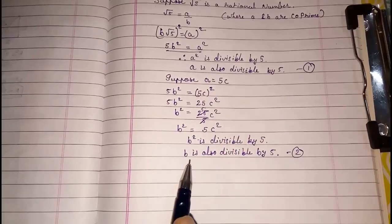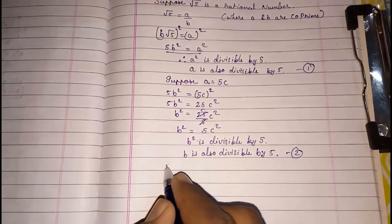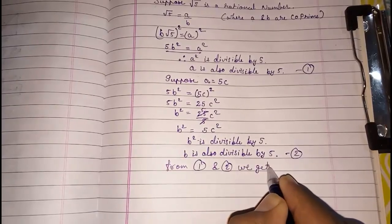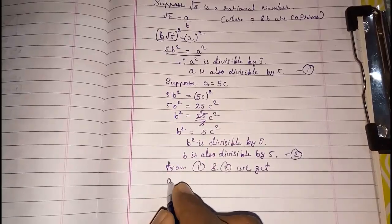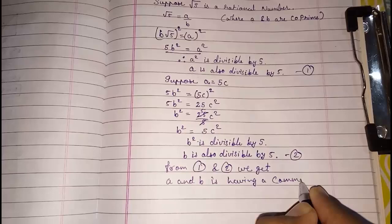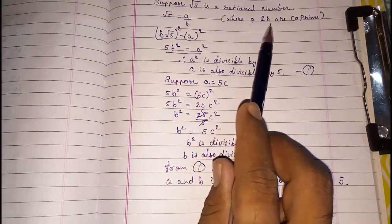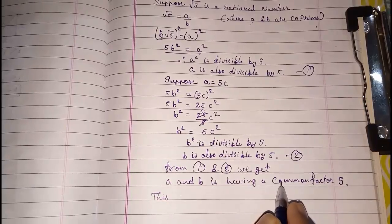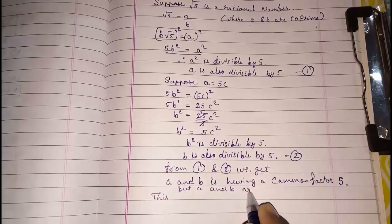In result number 1 we got that a is divisible by 5. In result number 2 we got that b is also divisible by 5. So from 1 and 2 we get that a and b are having a common factor 5. But this is opposite to our supposition where a and b were co-prime. So this is a contradiction — but a and b are co-prime.